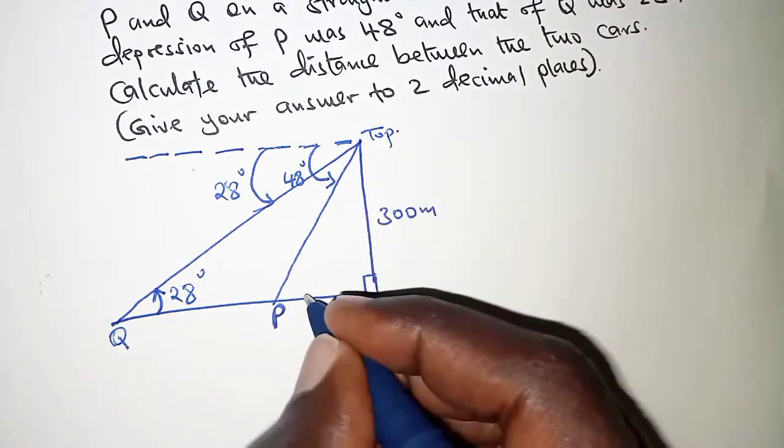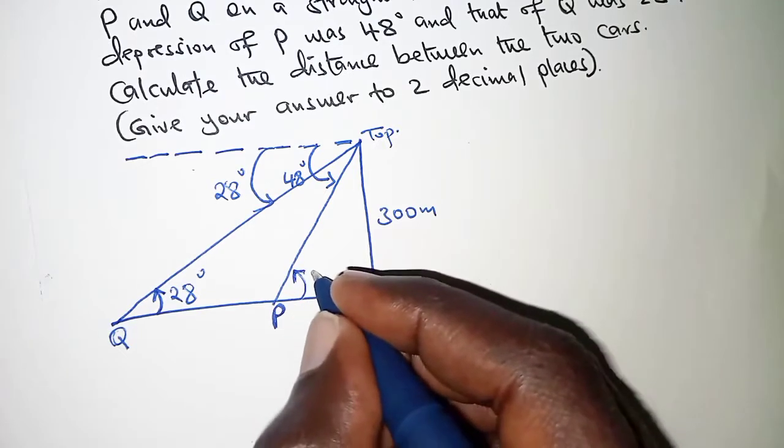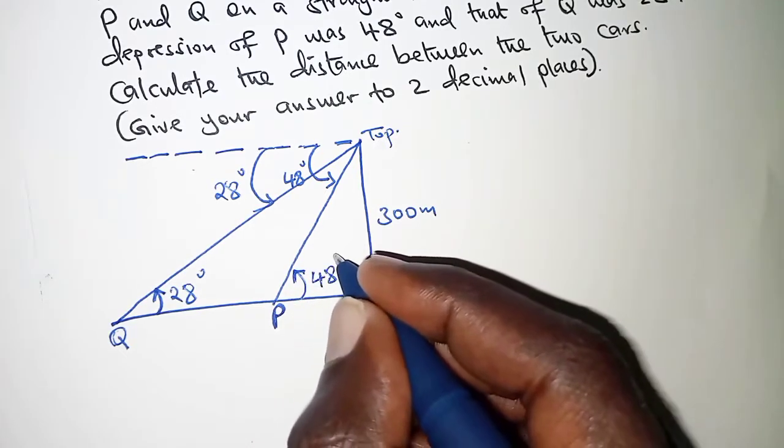Here also, if we have 48, then the angle of elevation at this point is 48 degrees.